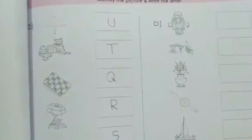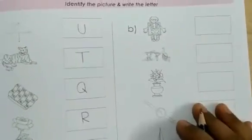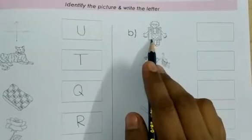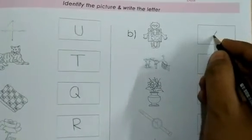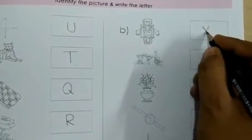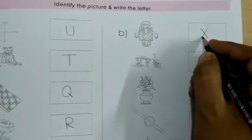Then, B. I'll fill up this blank code. What is this? X-Ray. That means X. Okay?